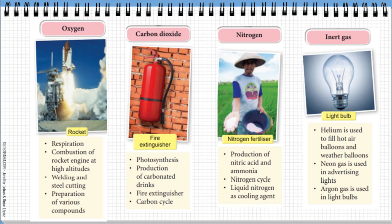Carbon dioxide is also important in the carbon cycle, which we'll cover in the next video. Nitrogen is important for the nitrogen cycle, liquid nitrogen can act as a cooling agent, and nitrogen is also used to produce fertilizer. For inert gases — helium is used to fill hot air balloons and weather balloons, and neon gas is used in advertising lights.